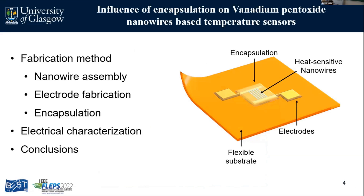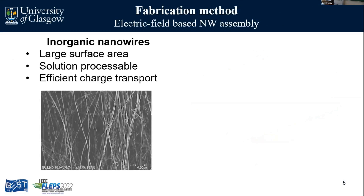With this motivation, what I'm going to show today is that we fabricated a temperature sensor and encapsulated it, and we're going to show you how this improves the performance of the sensor. Our temperature sensor uses heat-sensitive nanowires made of vanadium pentoxide (V2O5). First I will go through how we assemble the nanowires, then the fabrication, the encapsulation process, electrical characterization, and some conclusions.